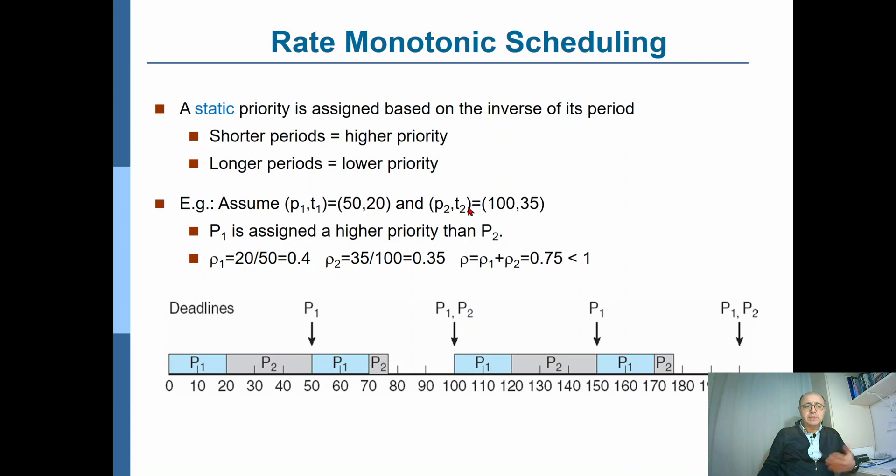And if we try to apply this algorithm on processes P1 and P2, P1 and P2 becoming available both at T equals 0, since P1 has higher priority, you first give the CPU to P1.